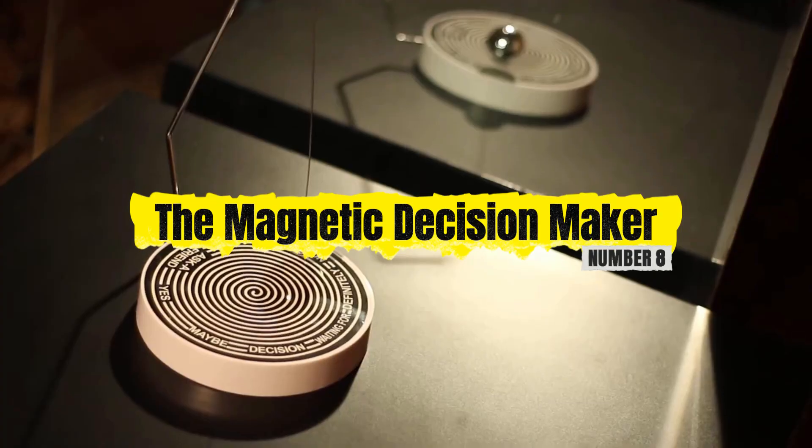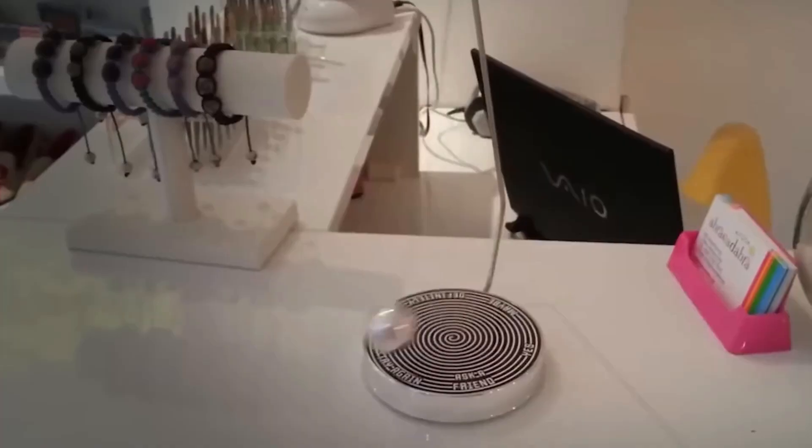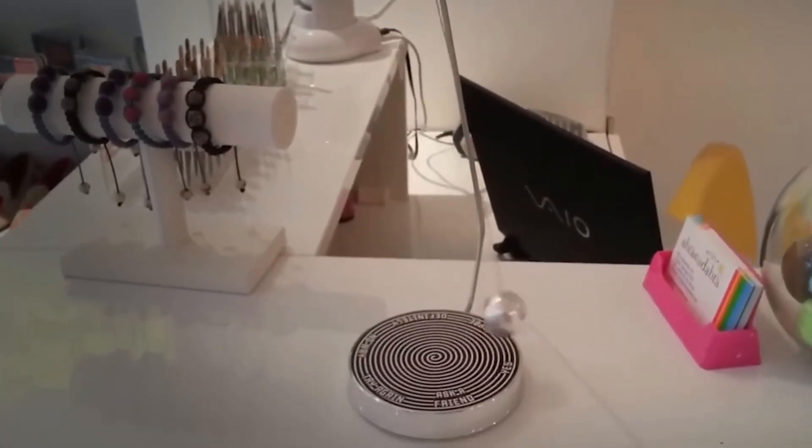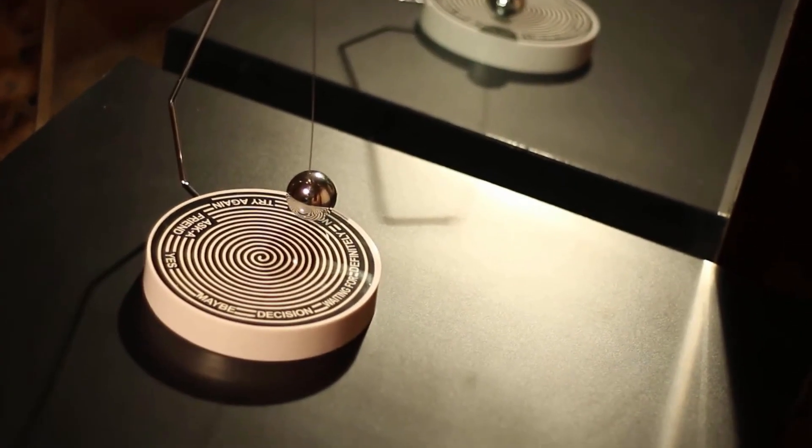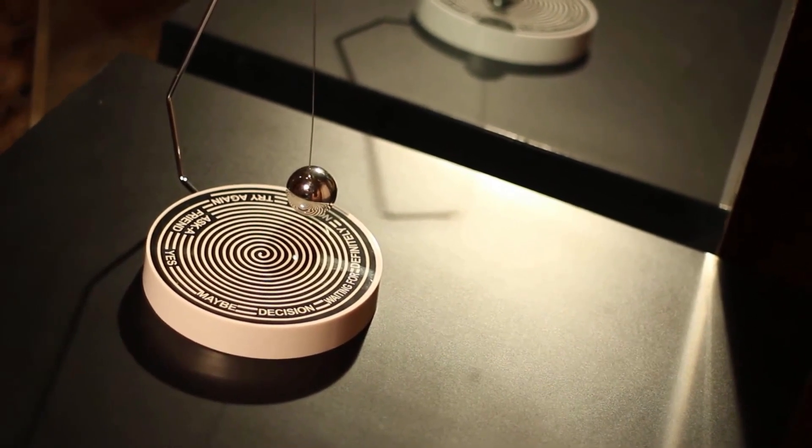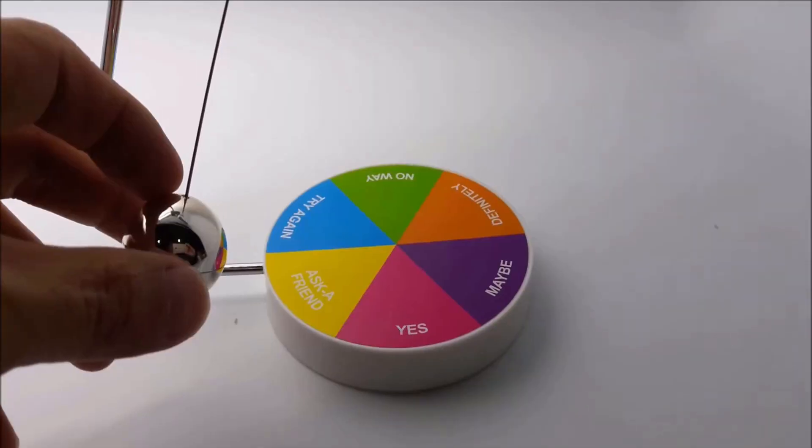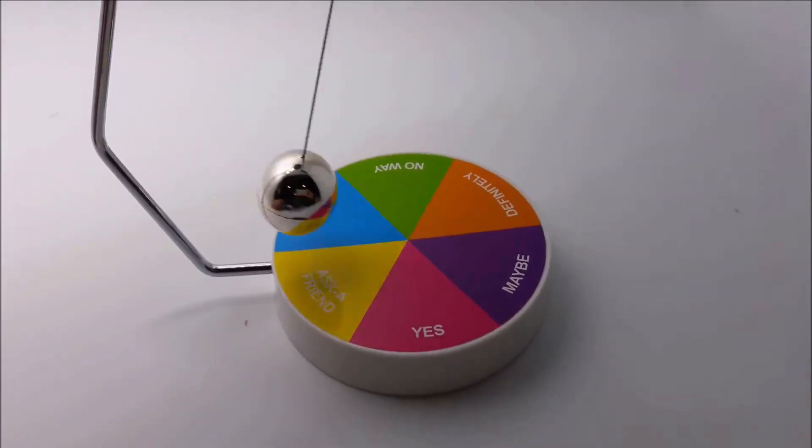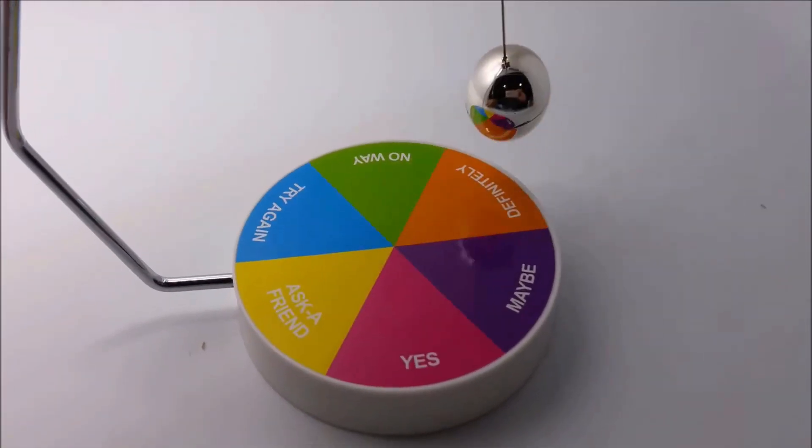Number 8. The Magnetic Decision Maker. What if a pendulum could predict your future, or at least help you make a decision? The Magnetic Decision Maker seems to do just that, but its chaotic movements are pure science. The pendulum at its core has a magnet, and the base is embedded with other magnets beneath words like yes, no, and maybe.